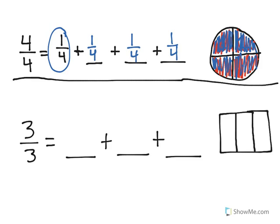Now at the bottom we have a rectangle broken into thirds. If we were to start with 3 thirds, that would mean that all three of these are shaded in.